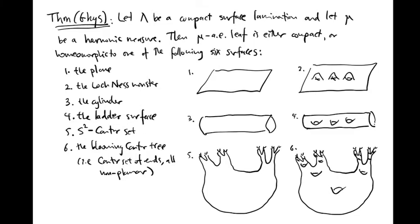In this lecture we prove the following theorem of Gies. Let lambda be a compact surface lamination and let mu be a harmonic measure.